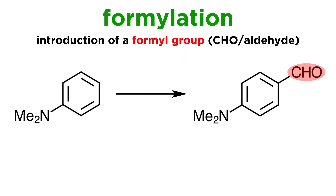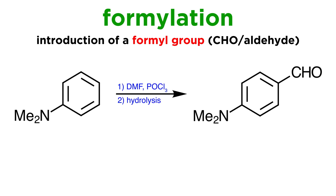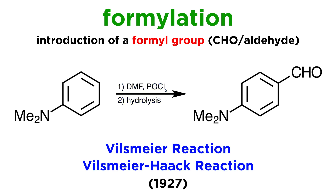A formylation is a reaction in which a formyl group is introduced to a compound, meaning a CHO group, resulting in an aldehyde. The formylation of electron-rich aromatic compounds with a mixture of dimethylformamide and phosphorus oxychloride is commonly referred to as the Vilsmeier reaction, or sometimes the Vilsmeier-Haack reaction, from the names of two German chemists who first described it in 1927.